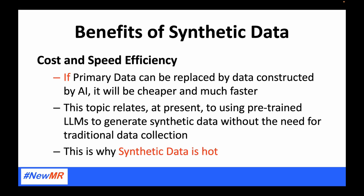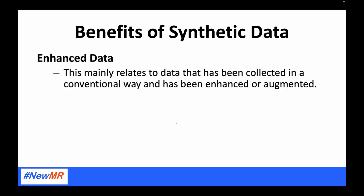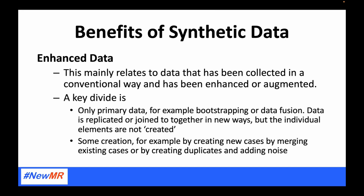This is why synthetic data is hot — it's all about speed and cost. Enhanced data is about data collected in a conventional way that is then enhanced or augmented, the way we do with hierarchical Bayes or multi-level regression and post-stratification — to get more value out of data. A key divide in opinion is whether the approach only replicates the primary data, so every piece of data came from a real person and hasn't been changed, or whether you're using an approach that creates new cases — even if simply taking two similar people and making a third who is the average of those two, or by adding noise.